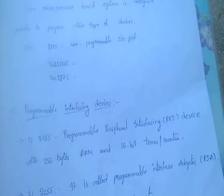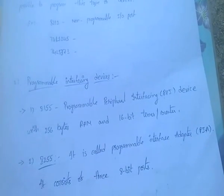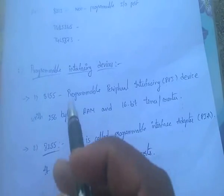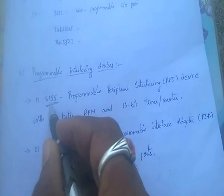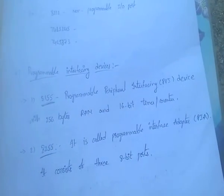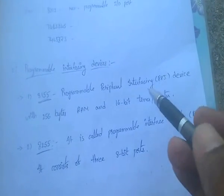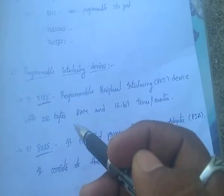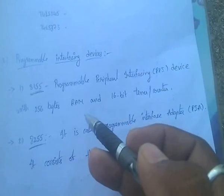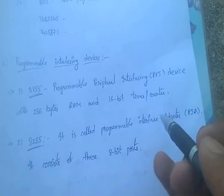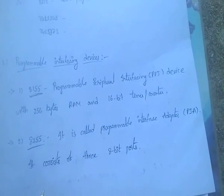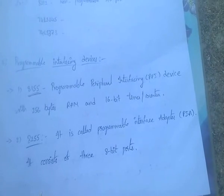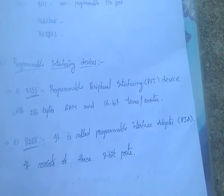Second, programmable interfacing devices. Some important ones are: 8155 — it is a programmable peripheral interfacing device (PPI) with 256 bytes RAM and a 16-bit timer or counter.